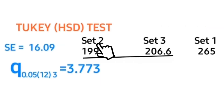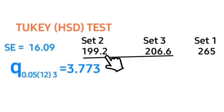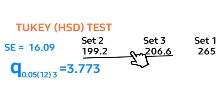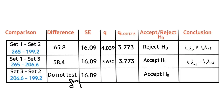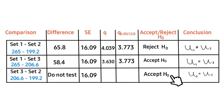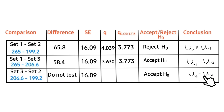For the comparison between Set 3 and Set 2, recall that we already found no significant difference between Set 2 and Set 3 when underlining. Since no difference was found between these two means, we do not test them. The rule is: since we do not test, we accept the null hypothesis and conclude that the mean for Set 3 is equal to the mean for Set 2.